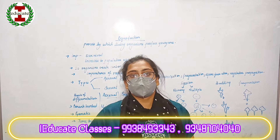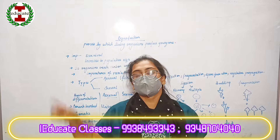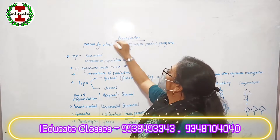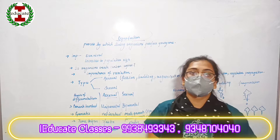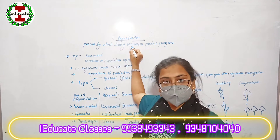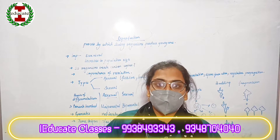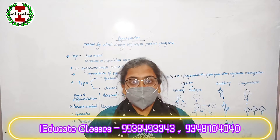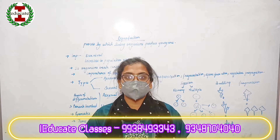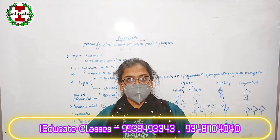Hello students, welcome to IAB8 classes. In today's class, I am going to teach you what is reproduction. So what basically is reproduction? The definition of reproduction states that it is the process by which a living organism produces young ones. The production of young ones means when a parent gives birth to their next generation.